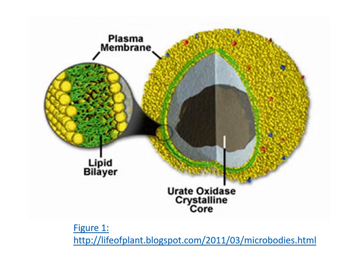Peroxisomes have the thickest membrane of all organelles. They have a dense matrix containing enzymes and a crystalloid core in the center, which is present in some species — for example, in rat liver cells — but absent in human liver cells. This crystalloid core contains urate oxidase enzyme, which oxidizes uric acid.